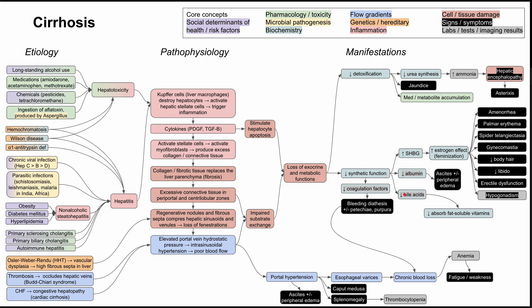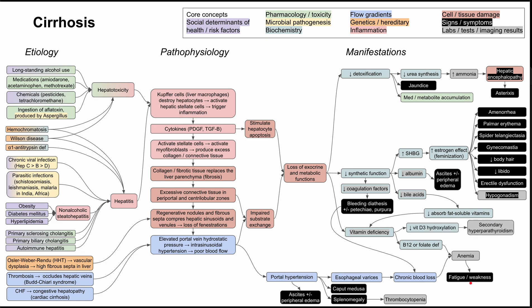Decreased synthetic function also means the body cannot produce adequate bile acids. Without bile acids in the gut, there is malabsorption of fat-soluble vitamins D, E, A, and K. Additionally, loss of liver function can lead to B12 and folate deficiency, causing a macrocytic anemia that also leads to fatigue and weakness. So the anemia can be microcytic from iron deficiency and chronic blood loss, or macrocytic from B12 and folate deficiency. This vitamin D deficiency also results in decreased vitamin D3 hydroxylation, which can cause secondary hyperparathyroidism.